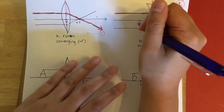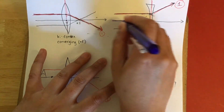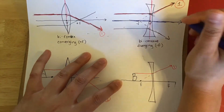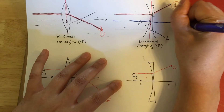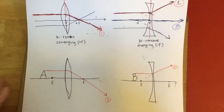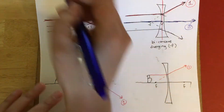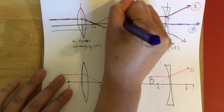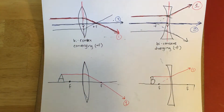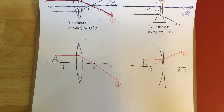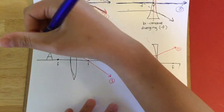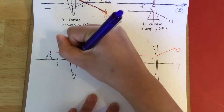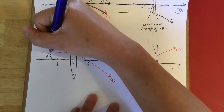Ray number two — I'll draw it in blue — represents the ray that goes through the vertex. Any ray that goes through the vertex of a lens keeps going in a straight line, undeterred. So ray number two is that straight-through ray.